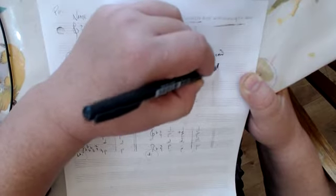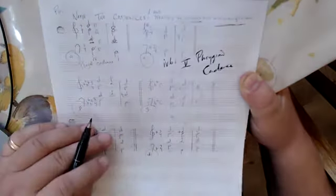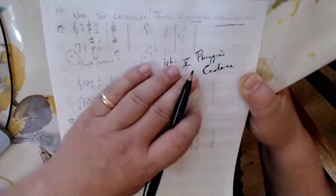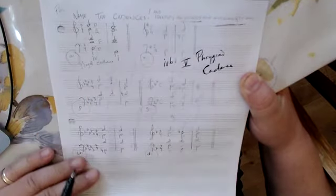Right? Right there. The special cadence that happens in the Baroque period where the four chord is in minor and it goes down by half step to the five chord right there. Okay?